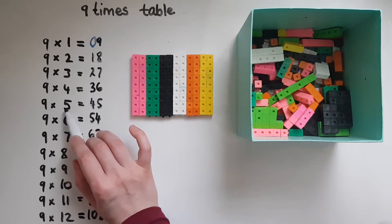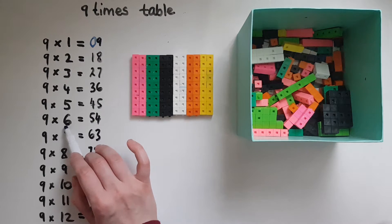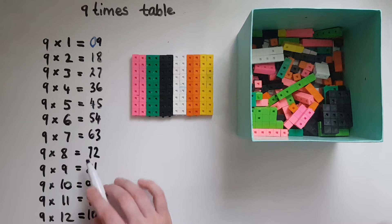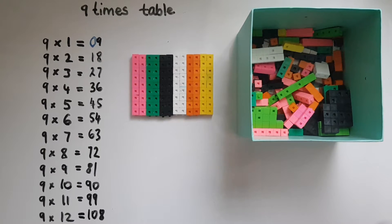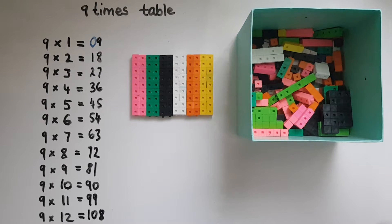4 take away 1 is 3. 5 take away 1 is 4. 6 take away 1 is 5, and so on. So we know that when we multiply 9 by a number, the answer is going to start with 1 less.